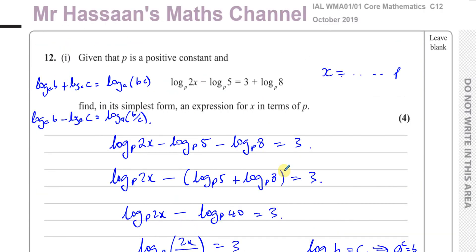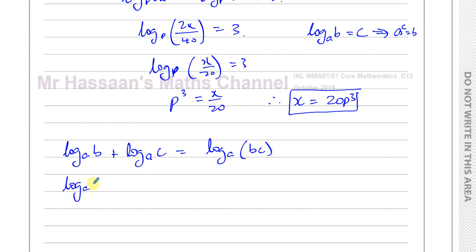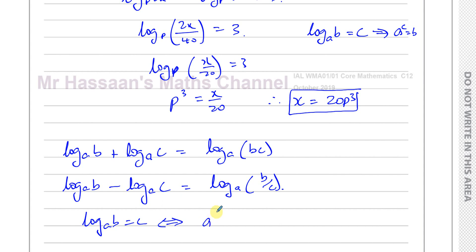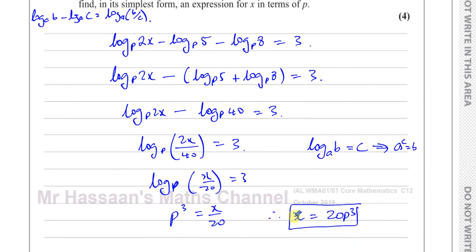That's a pretty simple log question, just using a few laws of logarithms. We used: log base A of B plus log base A of C equals log base A of BC; log base A of B minus log base A of C equals log base A of B divided by C; and if log base A of B equals C, rewrite as A to the power C equals B. These are very important rules used to express x in terms of P.